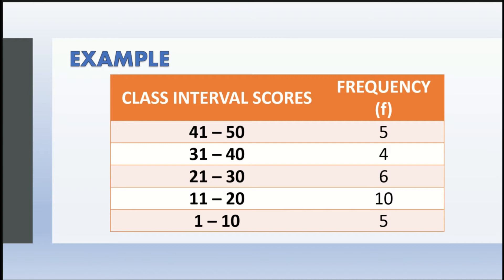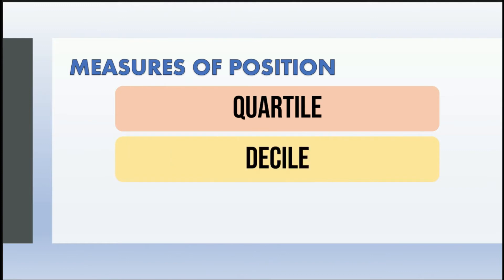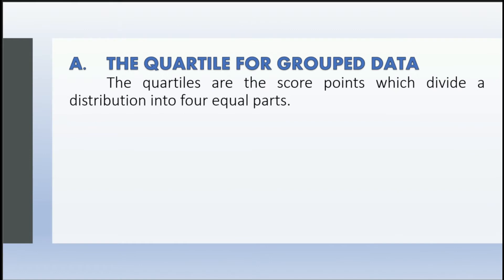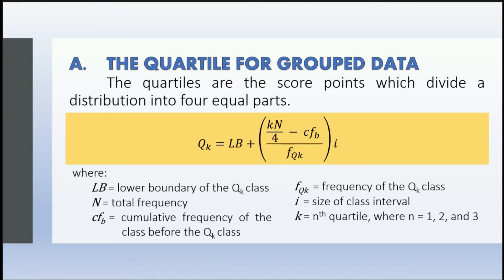Measures of position for group data: the quartile divides the data into four equal parts. Since we talk about group data, our formula will be different. We have Q sub k = lb + [(kn/4 − cf sub b) / f sub Qk] × i, where lb is the lower boundary of the Qk class.